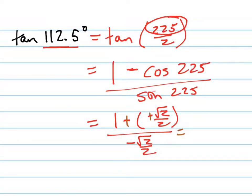Now let's keep simplifying this. I'm going to turn this into 2 over 2 so I have a common denominator. 2 plus root 2 all over 2, that's the numerator, all over negative root 2 over 2.